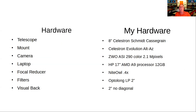The hardware involved includes everything you would use for visual astronomy plus a telescope, mount, camera, laptop, focal reducer, some filters, and a visual back. My hardware specifically: I have the Celestron Evolution 8-inch Schmidt-Cassegrain on an alt-azimuth mount. My camera is a ZWO 290 color with about 2.1 megapixels. My laptop is a cheap used machine with a very low power processor but 12 gigabytes of memory. I also bought the Night Owl 0.4 focal reducer, which brings the telescope from f/10 down to f/4.